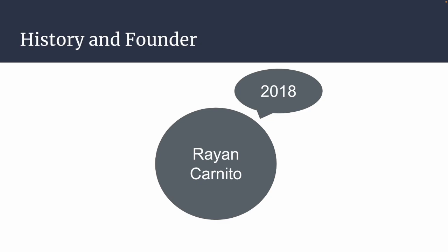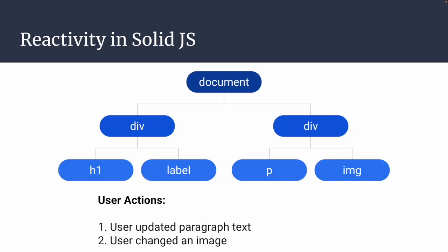Let's understand reactivity in SolidJS. Consider a document — a page with a div containing an h1 tag, a label, a paragraph, and an image. If a user updates the paragraph text, for example changing it from 'psi' to 'SolidJS', in normal frameworks the entire DOM is re-rendered: document, div, div, h1, label, paragraph, and image.